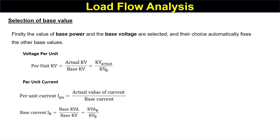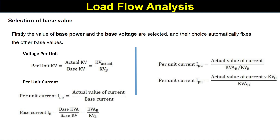Substituting the value of base current into the per unit current equation, the per unit current becomes the actual value of current multiplied by base voltage, divided by base power. So, per unit current is expressed in terms of base voltage and base power. Whatever per unit value we have, we should express it in terms of base voltage and base power.